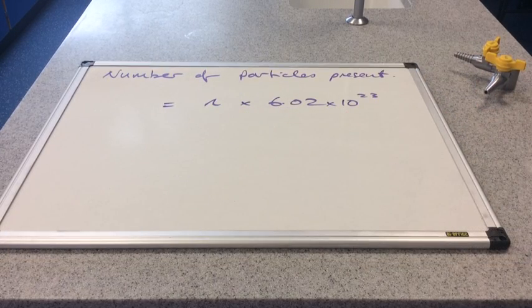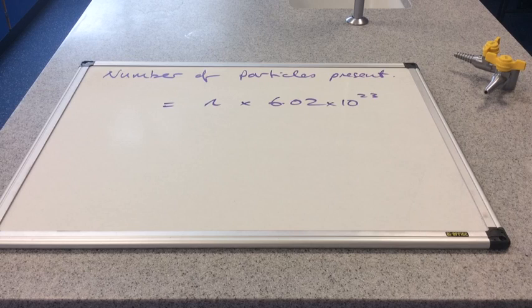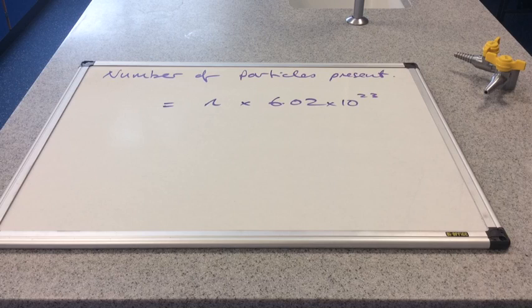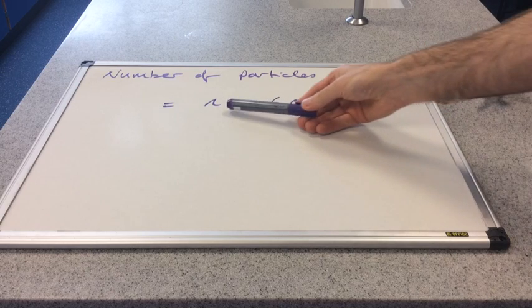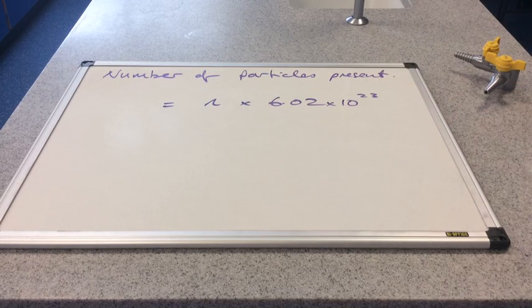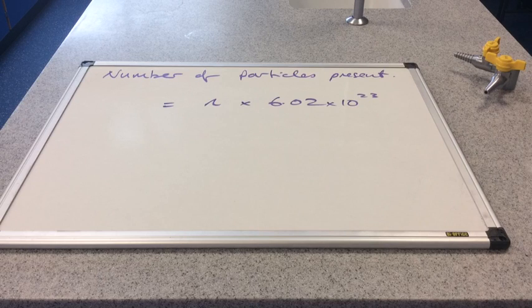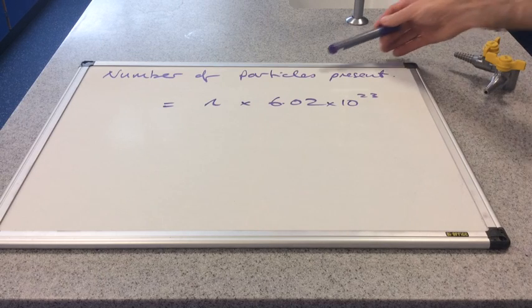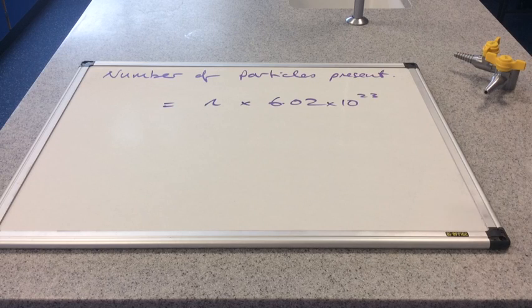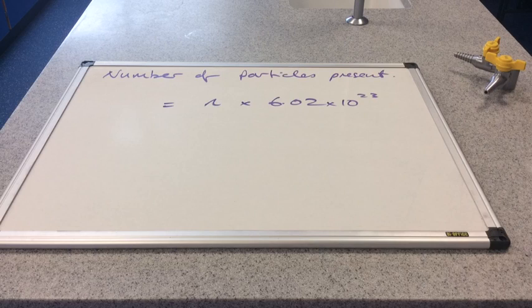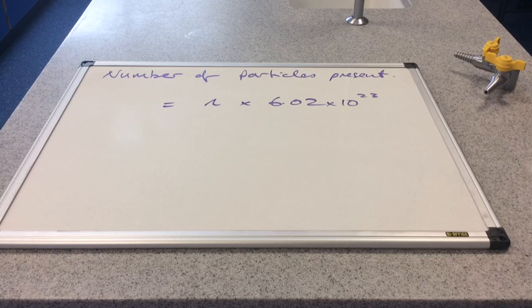And of course once we know how many moles we've got we can find out how many particles we've got simply by multiplying by Avogadro's number. So if we've got one mole of carbon-12, which we've just calculated, how many particles will be present and by particles in this case I mean atoms, we've obviously got 6.02 times 10 to the 23. There's two handy formulae for you: the mass moles MR triangle and the number of particles equals the moles times Avogadro's number.